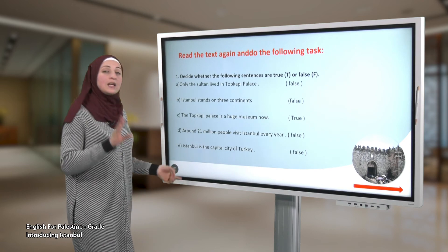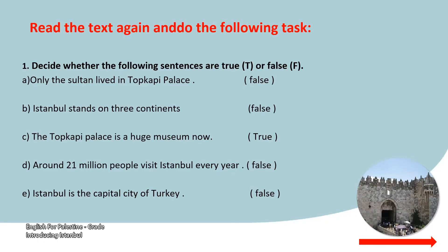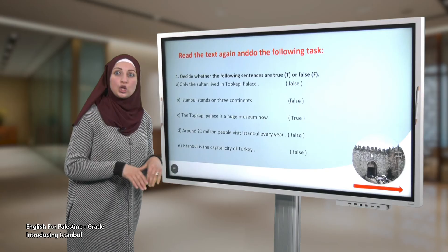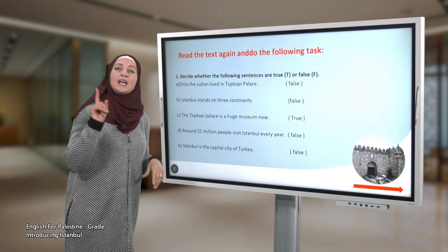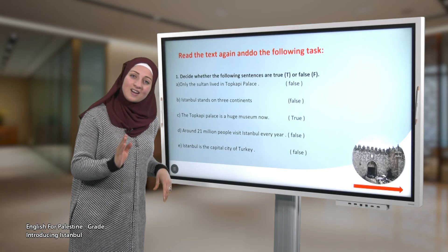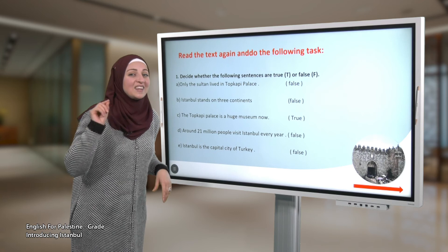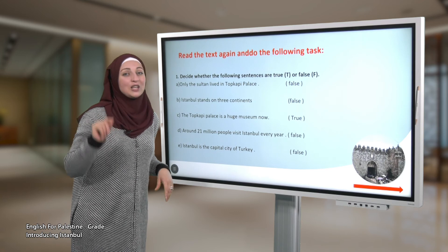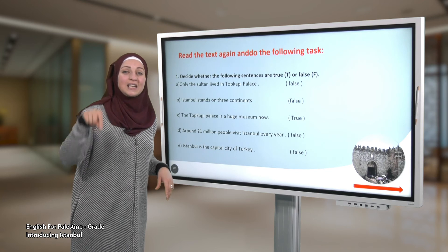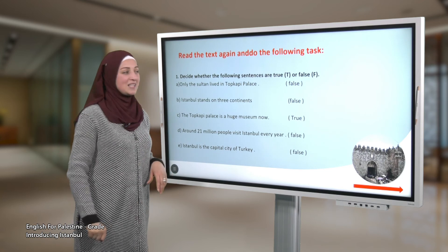The last one: Istanbul is the capital city of Turkey nowadays — no, it is false. Ankara is the capital city of Turkey nowadays.